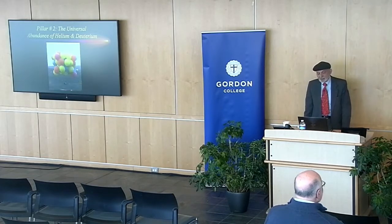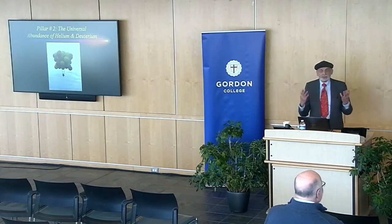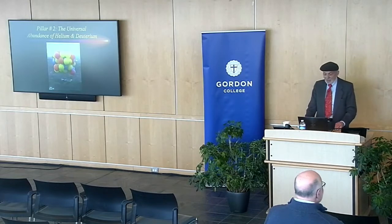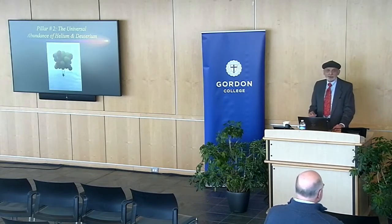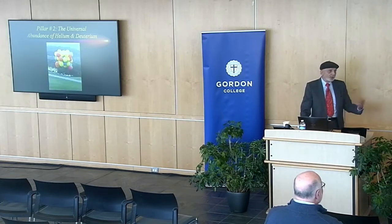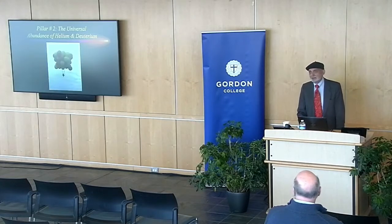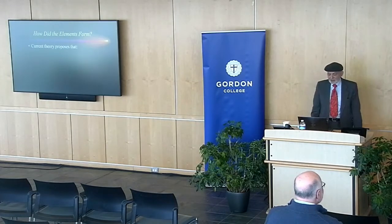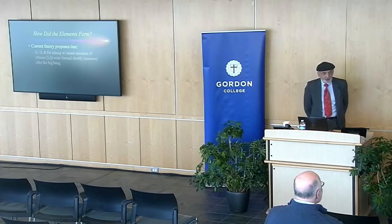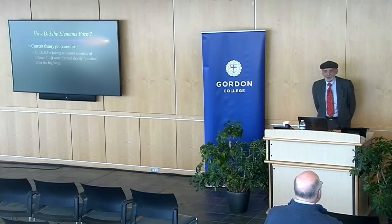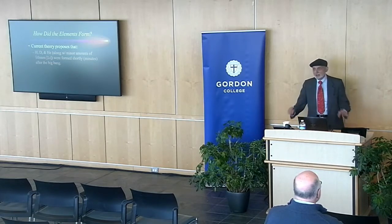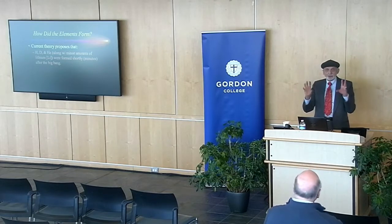What is proposed in terms of the origin of the elements is that hydrogen — H — and deuterium D, just another form of hydrogen — along with helium and minor amounts of lithium — very light elements in the periodic table — were formed shortly after the Big Bang. We talked yesterday about the Big Bang beginning at time T equals zero. When would these elements have been formed? Basically within about the first three minutes of the Big Bang.